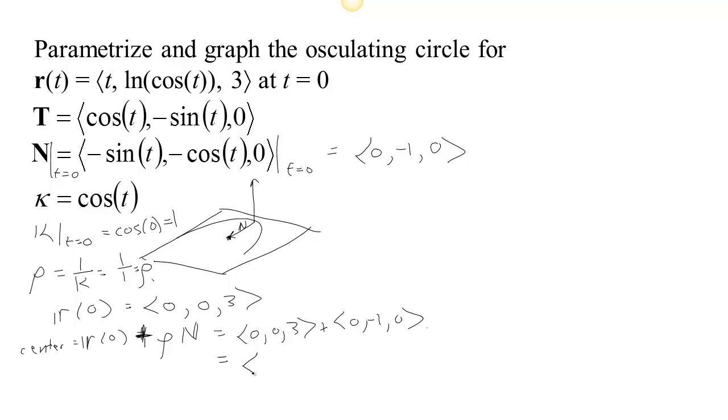So the center of our circle then is at 0, negative 1, 3. So I just, here's my point on the curve. I go a distance rho in the direction of the normal to get to the center of the circle. So we have a circle of radius 1 and this is its center.